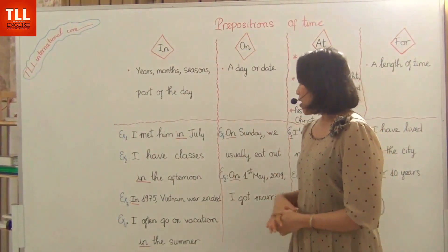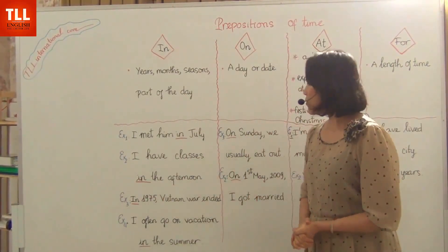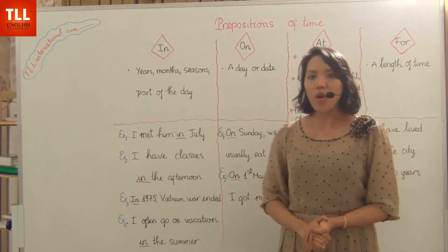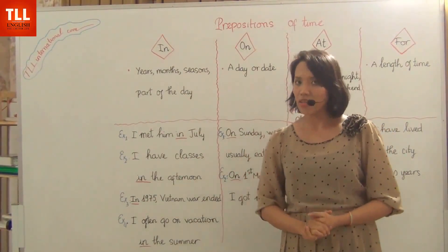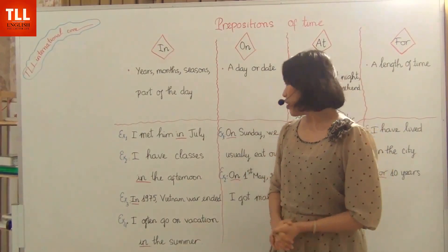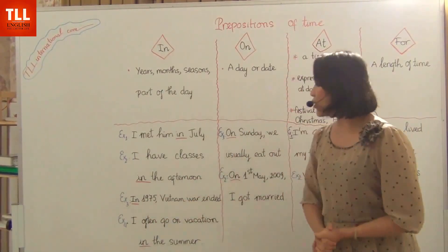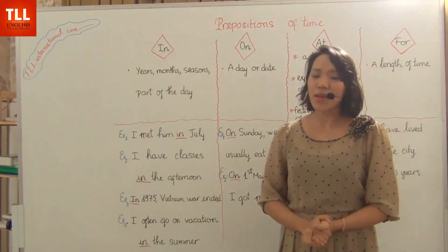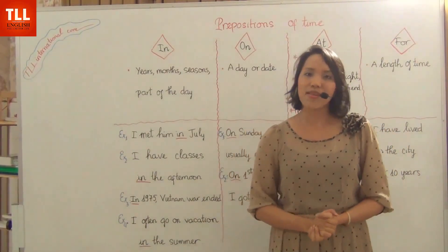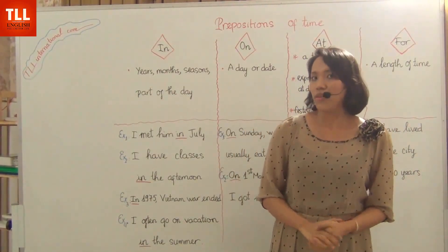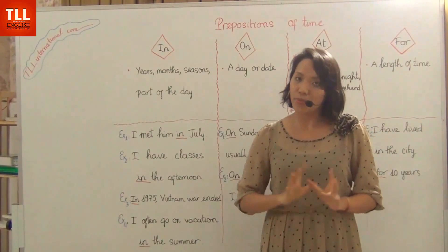Another example: 'In 1975, the Vietnam War ended' — 1975 is a year. And: 'I often go on vacation in the summer', 'in the spring', 'in the winter', or 'in the fall' — these are seasons of the year, so we use preposition 'in'.